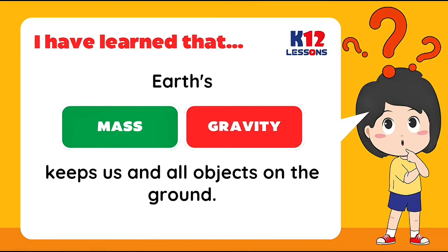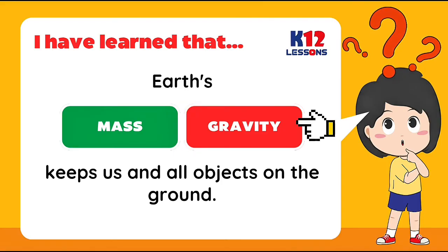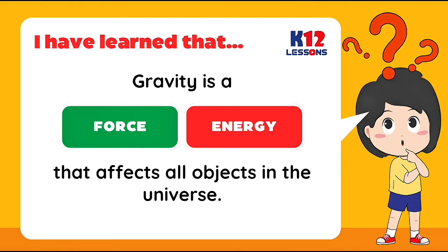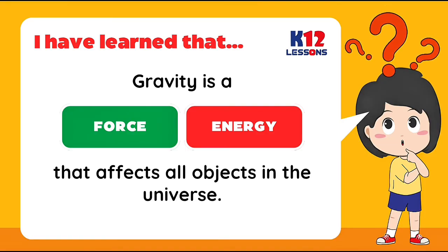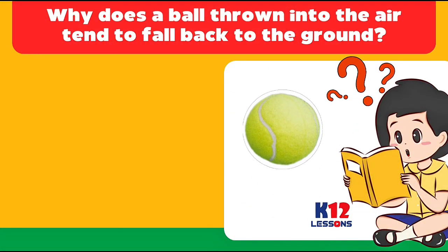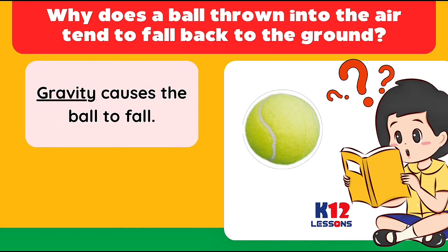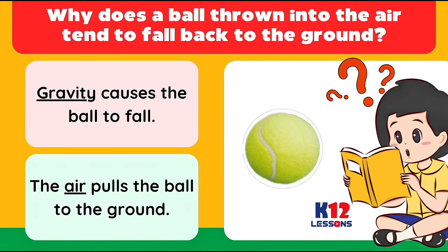Earth's gravity keeps us and all objects on the ground. Gravity is a force — not energy — that affects all objects in the universe. Why does a ball thrown into the air tend to fall back to the ground? Gravity causes the ball to fall. The air does not pull the ball to the ground.